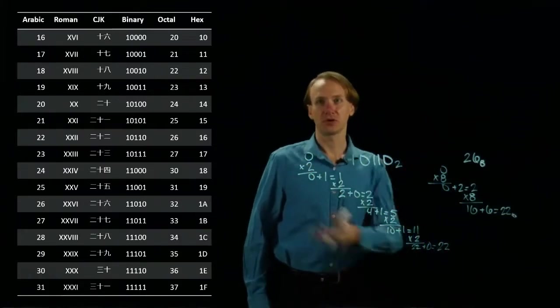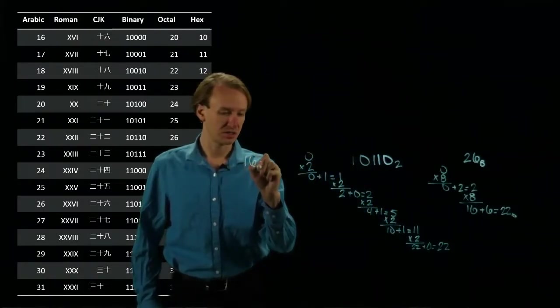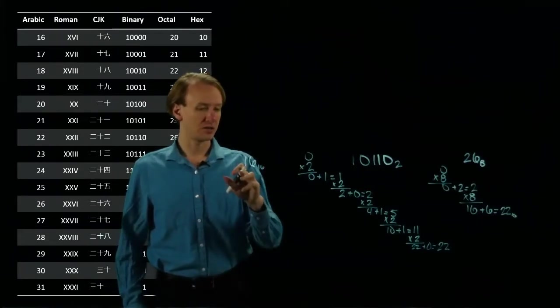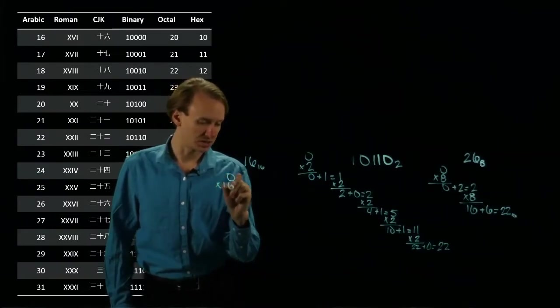So the same number in hexadecimal is 16. So if I start with 16 in hexadecimal, then I'll start with a 0 for my solution. And I'll multiply by 16.